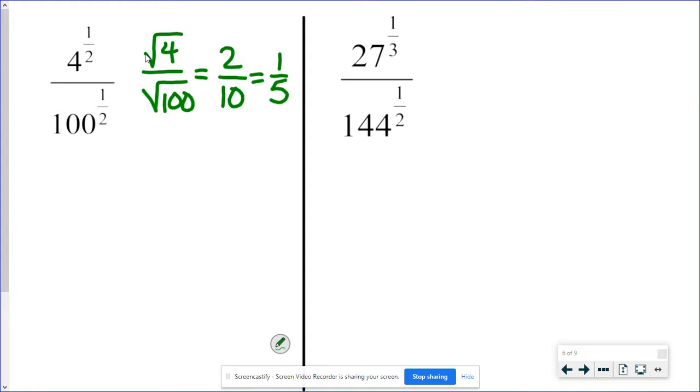Twenty-seven to the one third is the cube root of 27. One forty-four to the one half, that's the square root of one forty-four. Now notice, I said, in cube roots we have to have that little three. Square roots, we don't usually write the two. You can, but it's not necessary for a square root. You see just a radical with no number in that index spot. Everybody knows that means the square root.